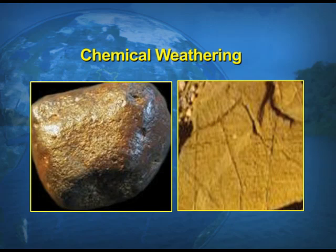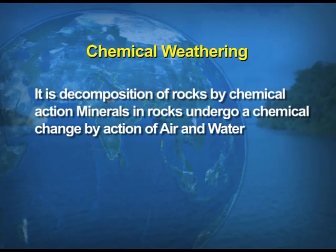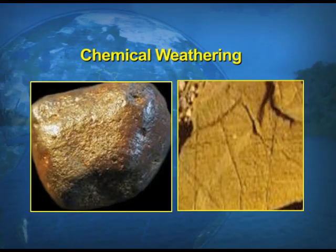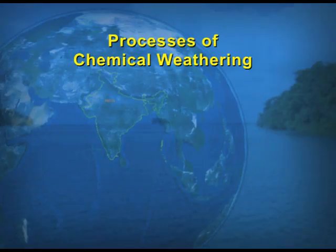Now we take up the second type of weathering — chemical weathering. As the name suggests, because of certain chemical reactions, when the rock disintegrates or chemically decomposes, that is known as chemical weathering. This visual shows pictures of chemical weathering and how the rocks look after chemical weathering takes place.